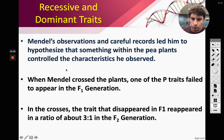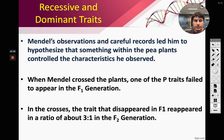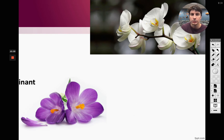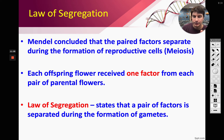As Mendel went through the P, F1, and F2 generations, he didn't know at first which trait was dominant or recessive. In the F1 generation, one parent's phenotype disappeared. When the F1 generation was crossed, that disappeared trait reappeared — that was the recessive allele. In this case, purple was dominant and white was recessive.